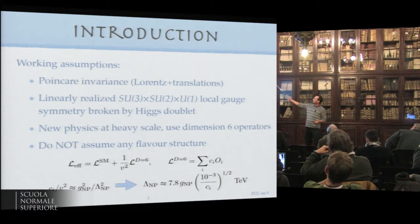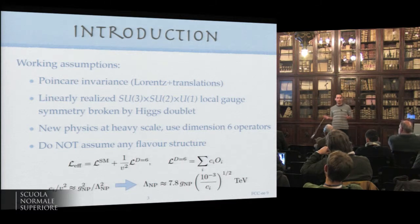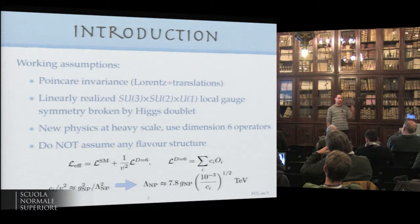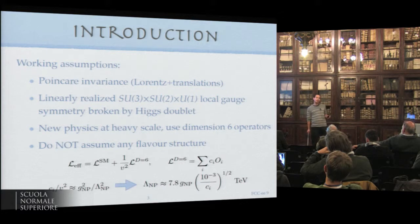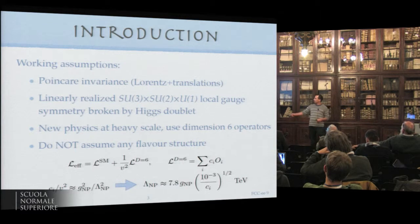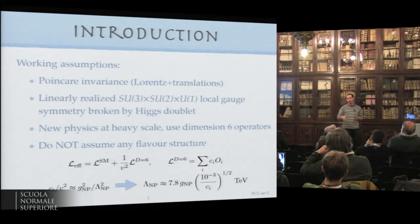We work under the following assumptions: the usual Poincaré invariance, linearly realized SU(3) cross SU(2) cross U(1) local gauge symmetry broken by Higgs doublet, new physics at heavy scale captured by dimension six operators. But we do NOT assume any flavor structure.